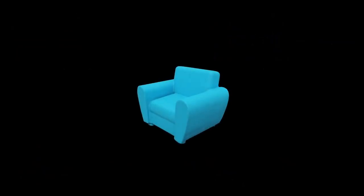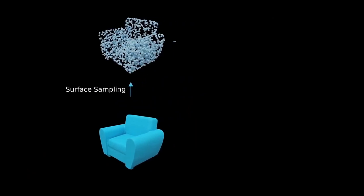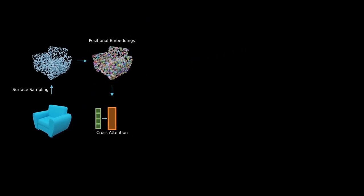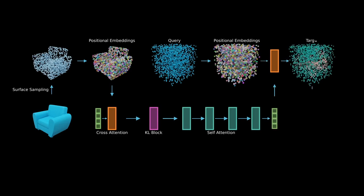Here, we visualize our shape autoencoding network. Given a shape, we first sample a point cloud on the surface. The points are then mapped to positional embeddings. We use a cross-attention module to encode the input as an initial set of latent vectors. This set of latent is further processed by a KL block and a series of self-attention blocks. To reconstruct a neural field, we use query points encoded using positional embeddings. We cross-attend the query points with the set of latent vectors from the shape representation. We get an output occupancy for each point. The final shape can be reconstructed with an isosurface extraction algorithm.